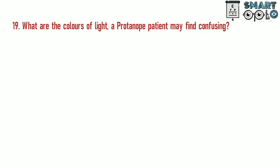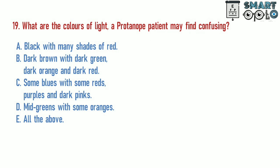Question 19. What are the colors of light a protanope patient may find confusing? A. Black with many shades of red. B. Dark brown with dark green, dark orange, and dark red. C. Some blues with some reds, purples, and dark pinks. D. Mid-greens with some oranges. E. All of the above.